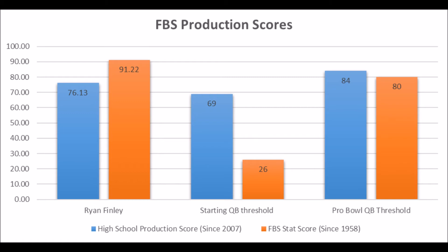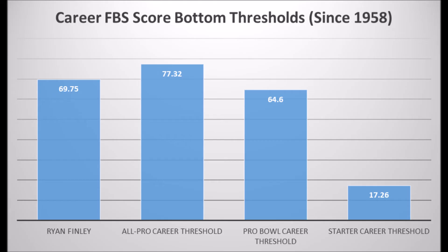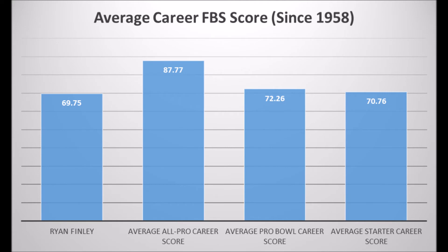His highest FBS production score was a 91.22 out of 100, which basically hits above the starting threshold and the Pro Bowl quarterback threshold. Ryan Finley had a fantastic season last year, and without that season, we probably wouldn't be talking about him now. His average FBS score is 69.75 out of 100, which doesn't quite hit the all-pro career threshold but is definitely above the Pro Bowl career threshold. He's below the average Pro Bowl career score but very close.